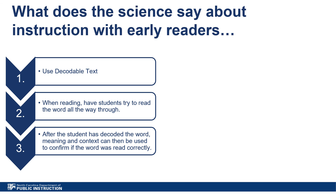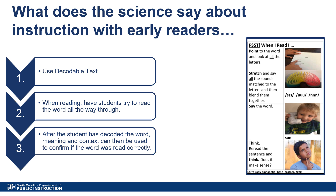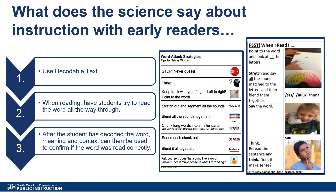Think back to the four processing systems and our example with the word bat. Based on the research of Linnea Airy, Pam Kastner has developed updated reading strategy bookmarks that can be used to support early readers. These strategies are based on the acronym P-S-S-T: P — point to the word and look at all the letters; S — stretch and say all the sounds; S — say the word; T — think, reread the sentence and think, does it make sense? There is also a document of word attack strategies — tips for tricky words — that are in alignment with the science of reading.